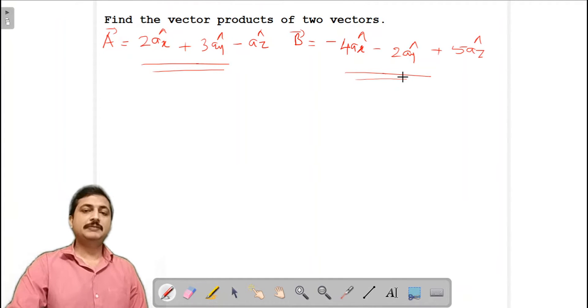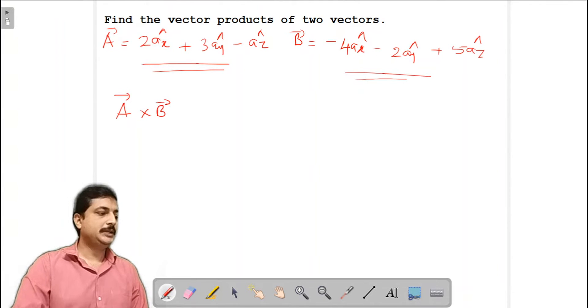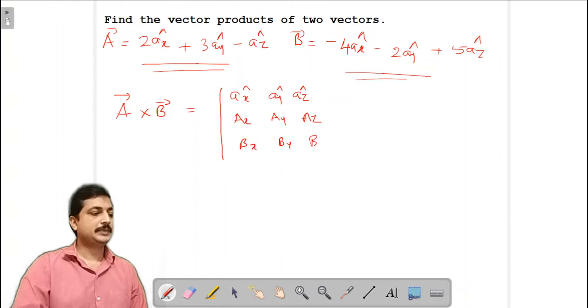So how can we find? Again we will make use of the formula for finding the cross product directly. So what we have derived in our theoretical class for A cross B. A cross B can be found as the determinant of a vector. So this is ax cap, ay cap, az cap, magnitude of A vector that is ax, ay, az, then bx, by, bz.